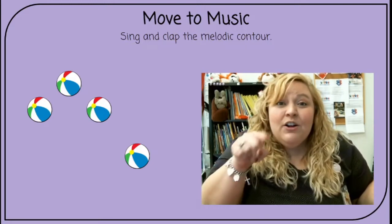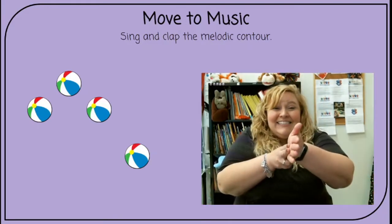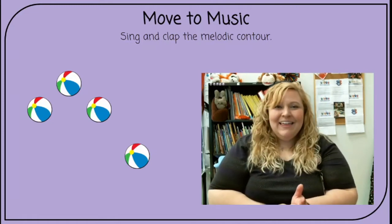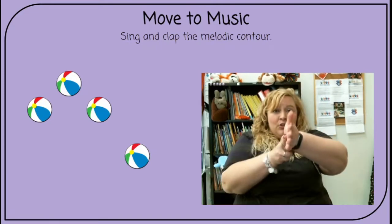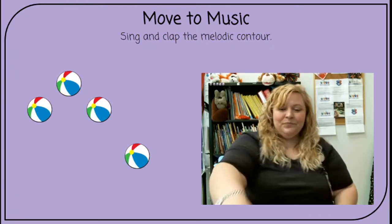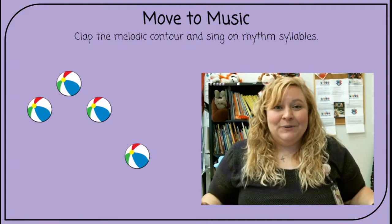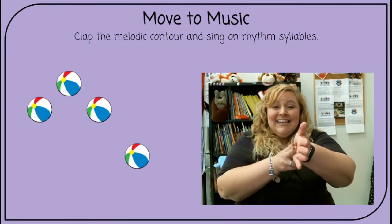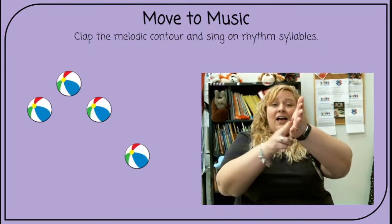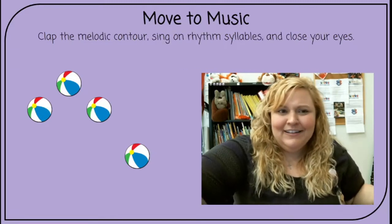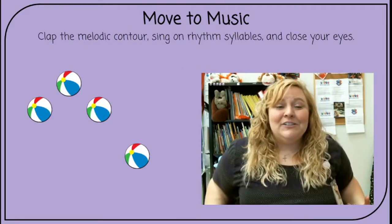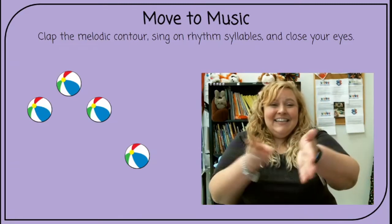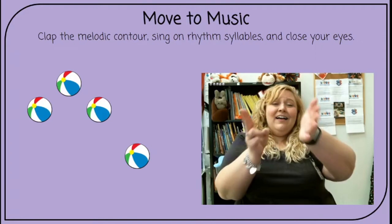And guess what? It's right there on the screen in front of you. Ready, sing. Loo, loo, loo, loo, loo. Do that again and ready, sing. Clap the melodic contour and sing on rhythm syllables — it's really easy. Ready, sing. Ta, ta, ta, ta. That's it, it just used 'ta.' Clap the melodic contour, sing on rhythm syllables, and close your eyes. Ready, sing. Ta, ta, ta, ta.